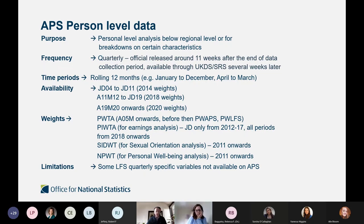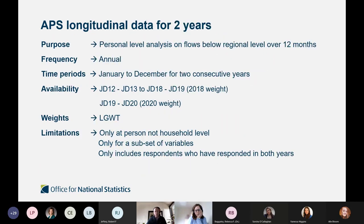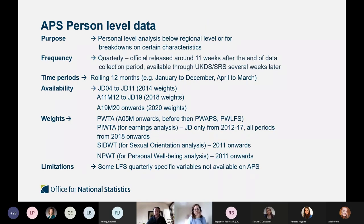Like the LFS person datasets, the main purpose is to produce person-level statistics broken down by personal characteristics. You should never use the APS person datasets for family or household analysis, as you might not have everyone in the household — only responding individuals. There are four APS person datasets published every year on a rolling annual period: January to December, then moving on a quarter to April to March the following year, etc.